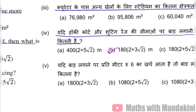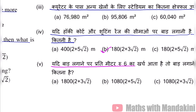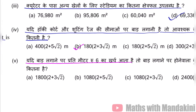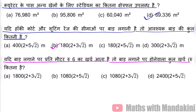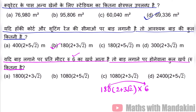Next: what is the cost? If the cost of fencing is 6 rupees per meter, how much is the total cost? The fencing length is 180(2 + 3√2). We multiply this by 6: 6 into 180 into (2 + 3√2) equals 1,080(2 + 3√2). Option C is the correct answer.